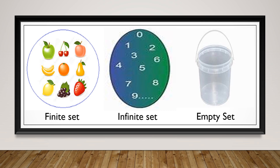Over here we have our infinite set — this is a set of all numbers. We start at zero and continue counting and counting, and the numbers get bigger and bigger and go on and on and never stop. So this is an infinite set. Remember: finite sets have a specific number of elements, but infinite sets never stop.